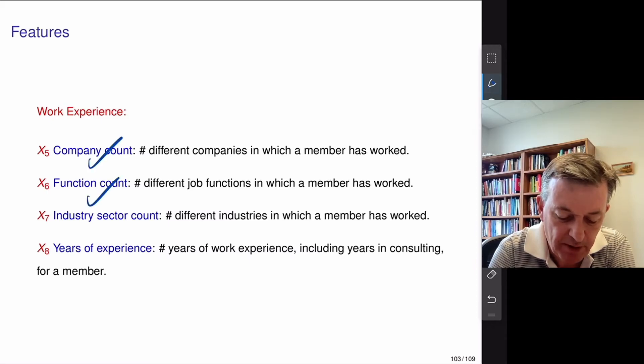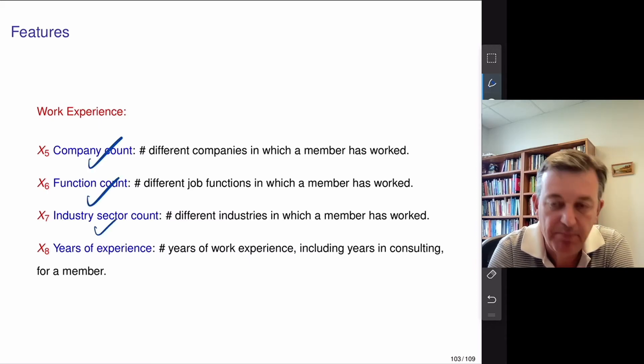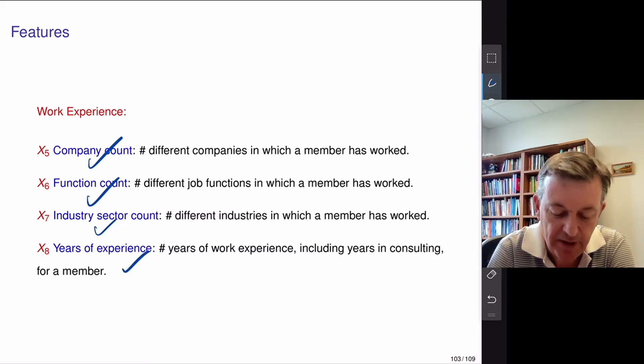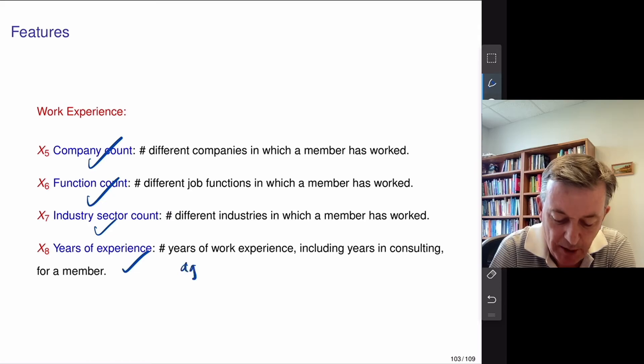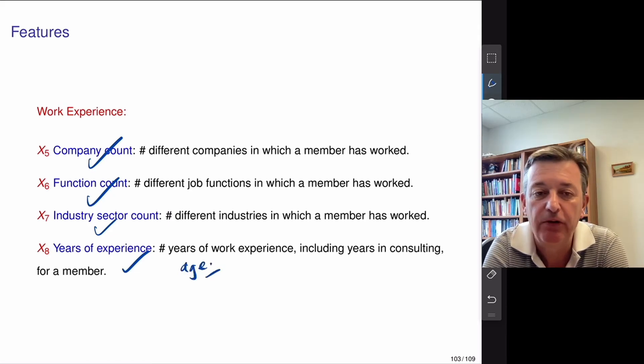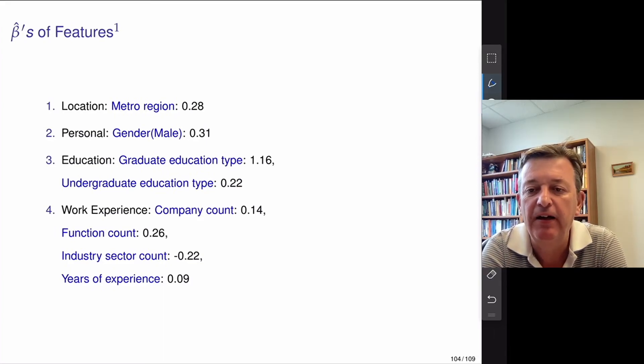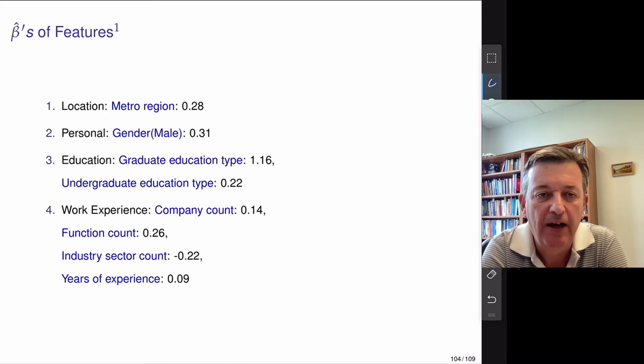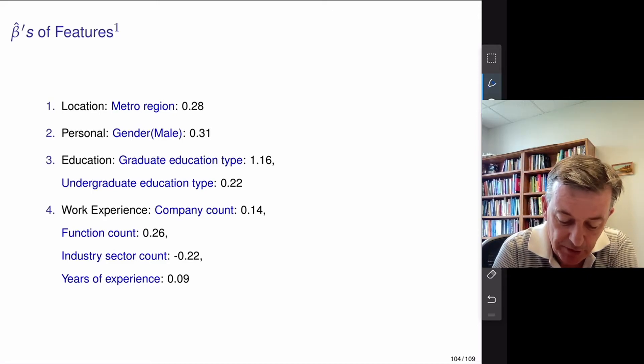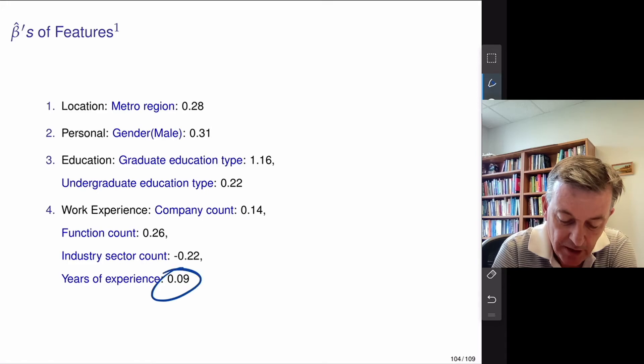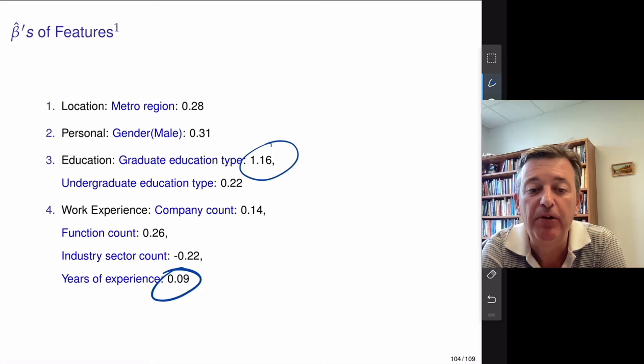And then, work experience is interesting. So, let's see how the model loads on these things. Does it matter how many companies you've worked for? Does it matter how many jobs you've done? Does it matter if you've jumped between industries or not? And then, does age, what is the marginal effect of work experience do for you? And so, remember, it's a huge data set, 459,000 LinkedIn CVs and variables of which 64,000 people, of which one in seven became executives.